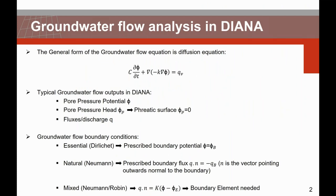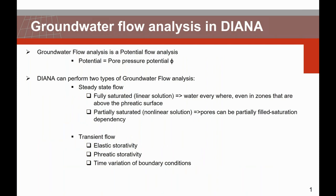Let's say a few words about groundwater flow in Diana. You need to perform a groundwater flow analysis, or a potential flow analysis, where the potential is a pore pressure potential. In Diana you can perform two types of groundwater flow analysis. The steady state groundwater flow analysis where you can consider a fully saturated state — a linear solution meaning water is everywhere, even in zones above the phreatic surface — or partially saturated, which is a non-linear solution where pores can be partially filled. We talk then of saturation dependency. The second type is transient groundwater flow, where boundary conditions can vary in time. This is a concept we will use in today's demo.